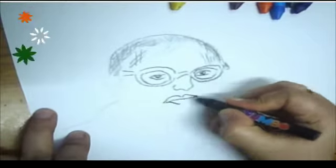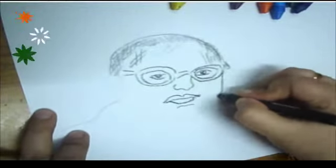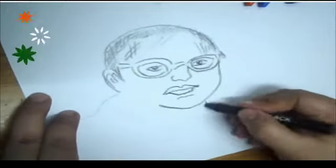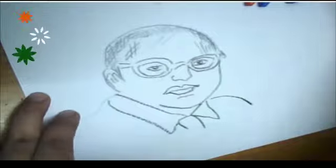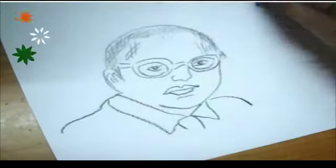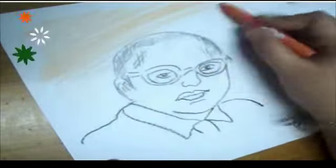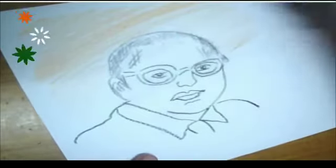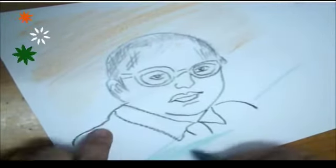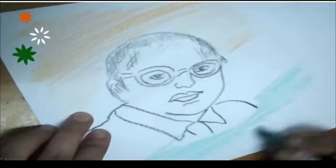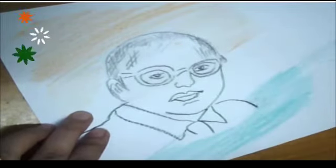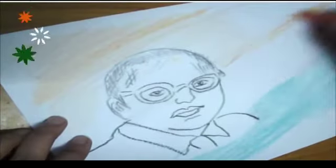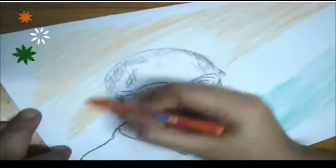Draw the outline, and here I am using crayons. As you know, Bhimrao Ramji Ambedkar, also known as Baba Sahib Ambedkar, was an Indian economist, politician, and social reformer who inspired the Dalit Buddhist movement and campaigned against social discrimination towards the untouchables. Here I am giving a tricolor touch-up to the background.